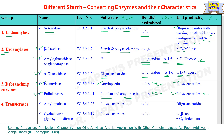Transferases include amylomaltase and cyclodextrin glycosyltransferase. Amylomaltase acts on polysaccharides, hydrolyzing alpha-1,4 glycosidic linkages. Cyclodextrin glycosyltransferase also acts on polysaccharides and hydrolyzes alpha-1,4 glycosidic linkages, with end products being alpha, beta, and gamma cyclodextrins.